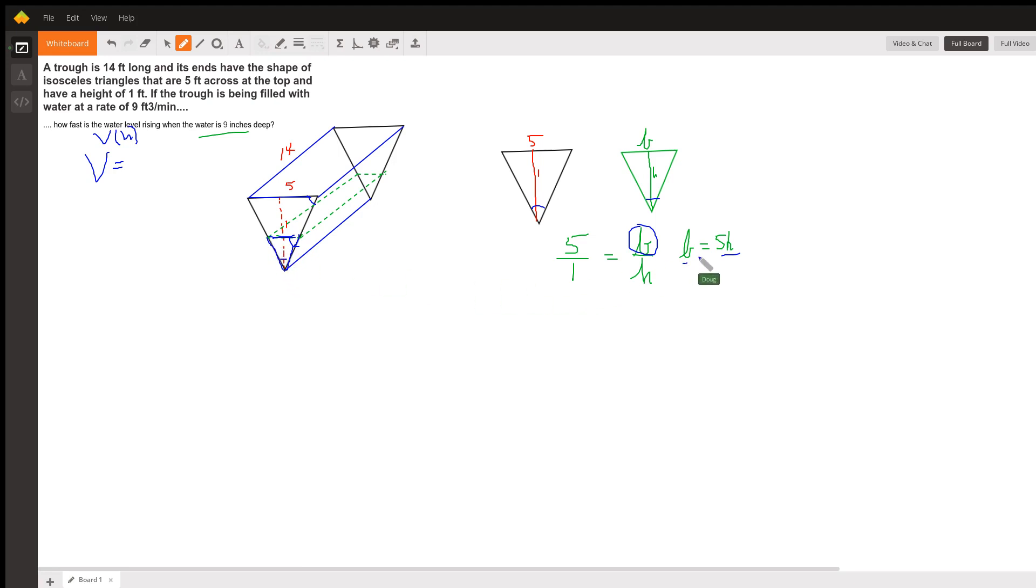the area of the base times the height of the prism well the area of the little isosceles triangle base is one half the base times the height so here is the formula for the area of the base one half the base oh but the base is 5h there is the base times the height which is h and so we've got length times width well i don't have the length here yet it's 14 so there's a formula for the volume of water that's in the trough